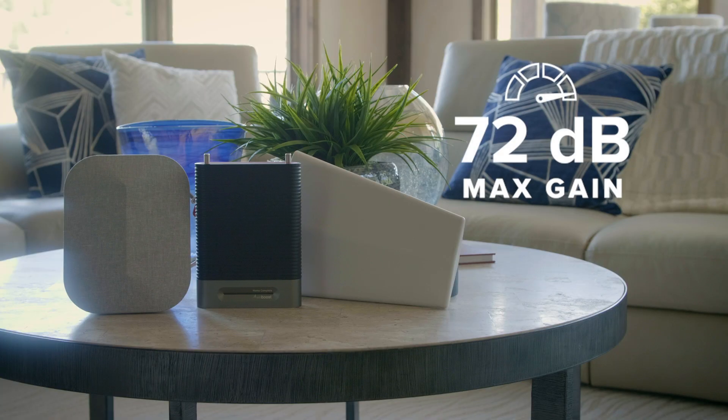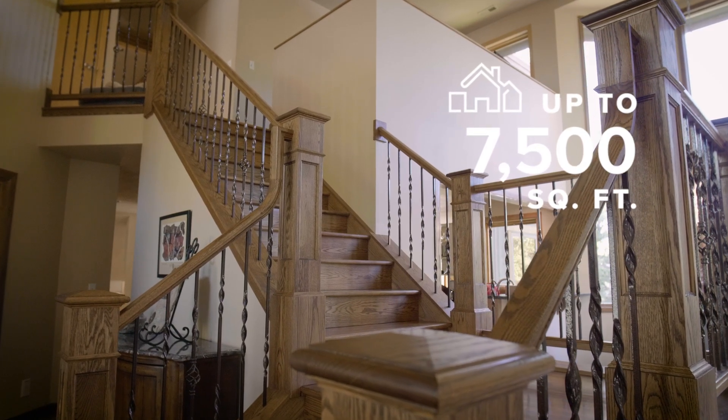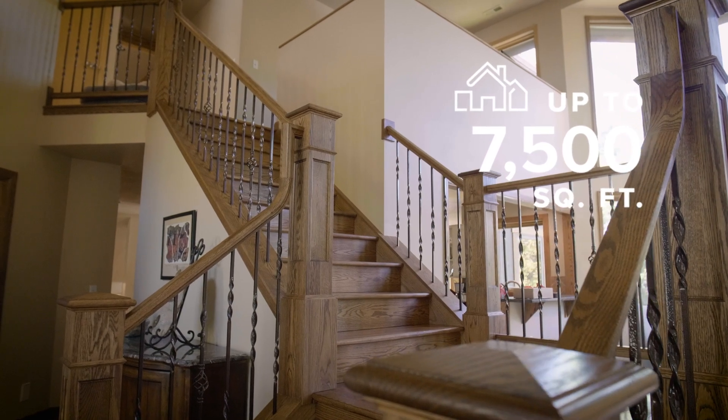Home Complete effortlessly boosts wireless network speeds across all carriers, providing extended cell coverage throughout a large multi-level home up to 7,500 square feet.